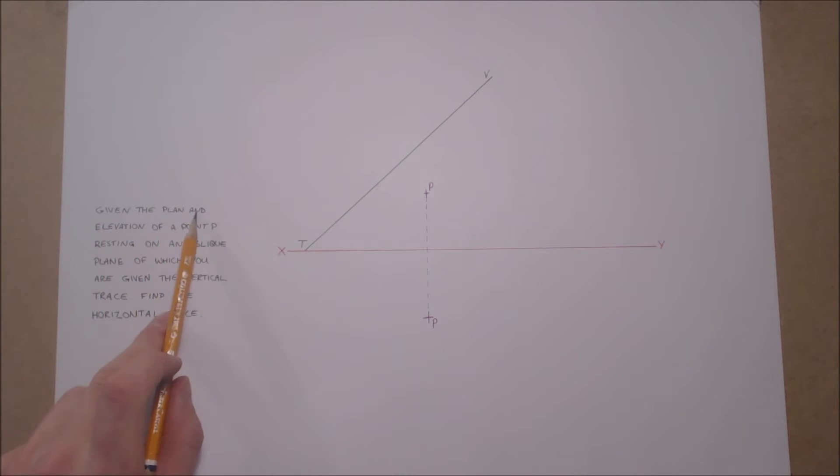Given the plan and elevation of point P, resting on the oblique plane of which you are given the vertical trace, find the horizontal trace.